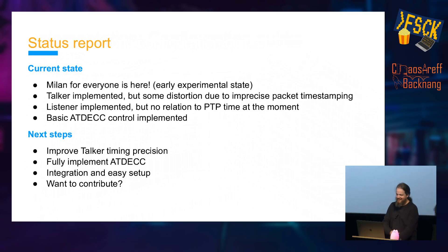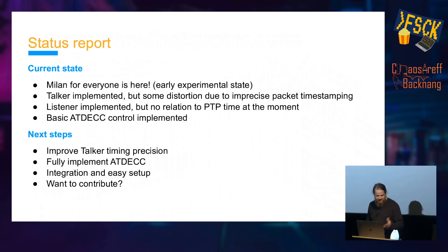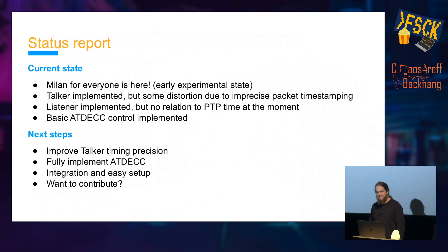We now have a proof of concept — Milan for everyone. It is in a very early, experimental state and not fully stable yet. We are able to send Milan traffic into the network, receive traffic, and we have some basic control and management functions implemented. Precision and control management still need improvement, and the setup process should be made easier. If you're here and want to contribute to a cool new open source project, come talk to me — I have a billion ideas of what could be done.